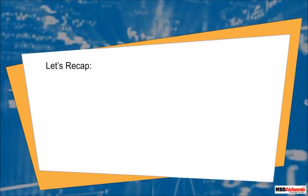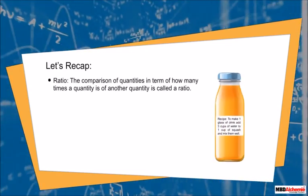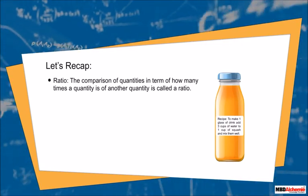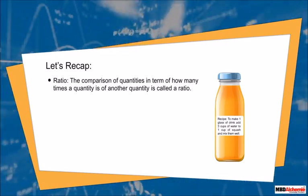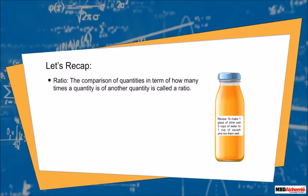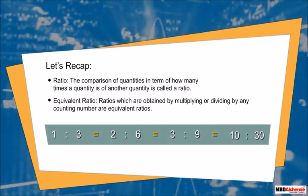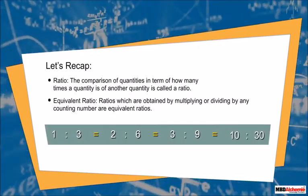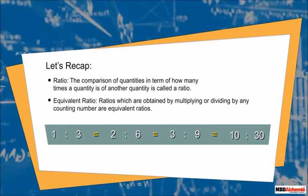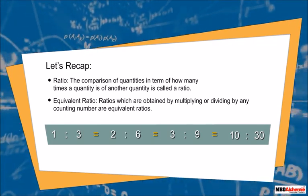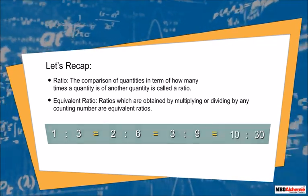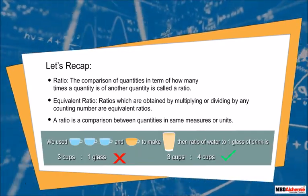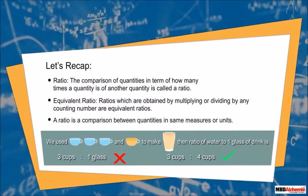Let's recap. Ratio: the comparison of quantities in terms of how many times a quantity is of another quantity is called a ratio. Equivalent ratio: ratios obtained by multiplying or dividing by any counting number are equivalent ratios. A ratio is a comparison between quantities in the same measures or units.